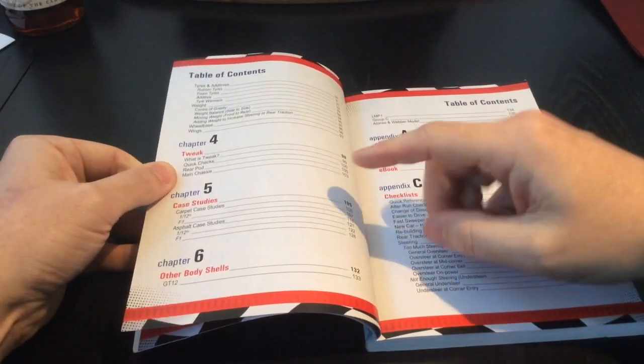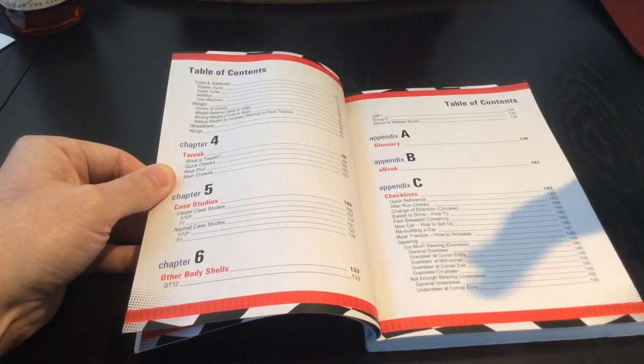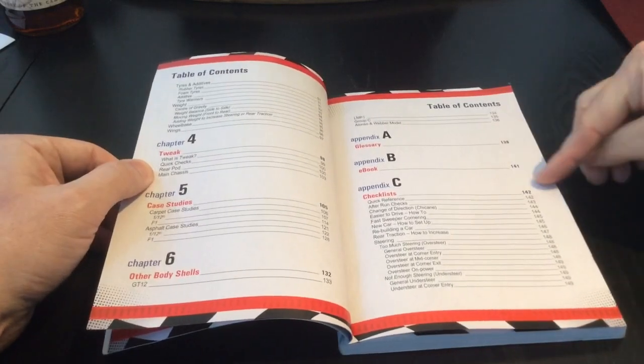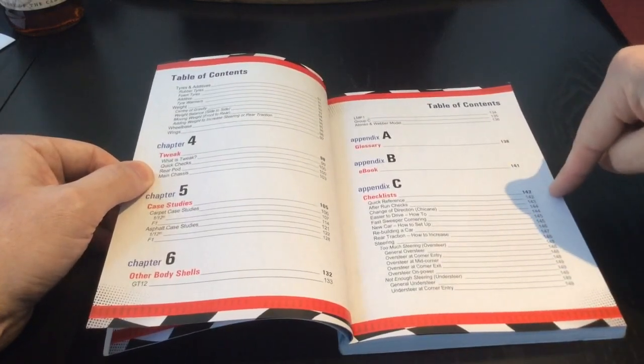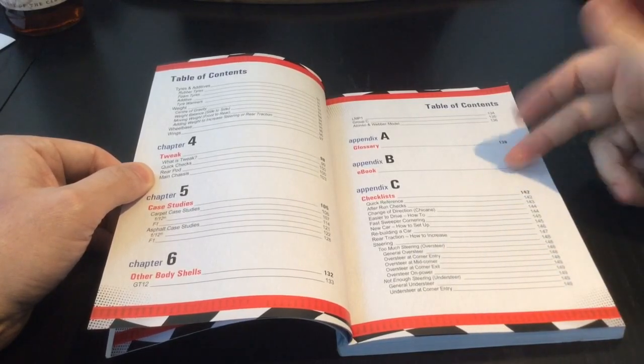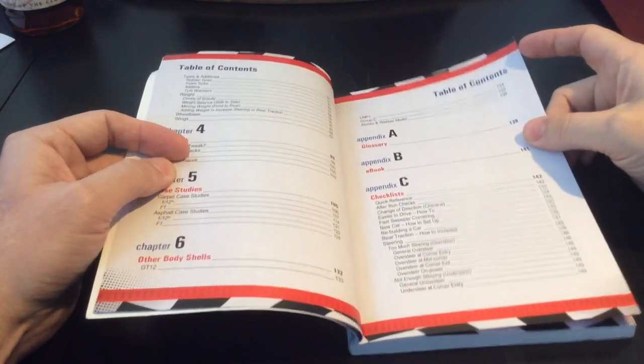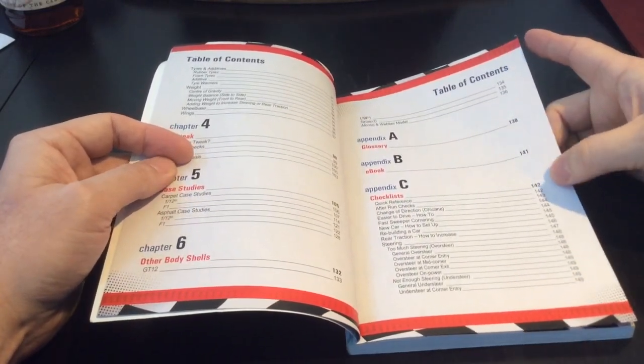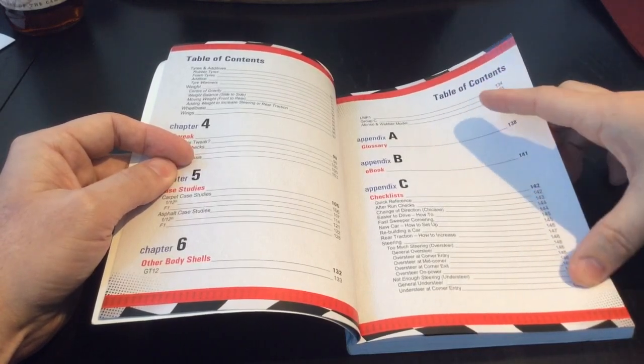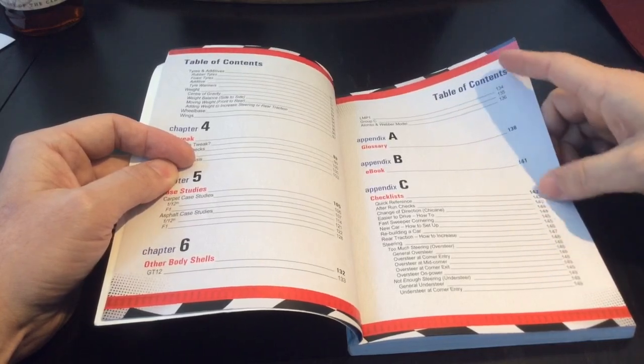Chapter four, tweak. Chapter five, case studies. I think this is a great section to have and he provides some case studies for different surfaces: carpet and asphalt. We'll take a look at that a little bit later on for you guys. Then it continues on. You have appendix B which states that there's an e-book, so if you guys want to have a digital copy you can go ahead or you can get this nice colorful softcover book as well.